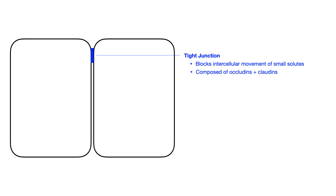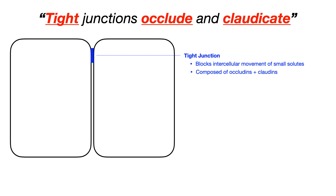Tight junctions are composed of two structures: occludins and claudins. My mnemonic to memorize all of this in one simple sentence is that tight junctions occlude and claudicate. Occlude means to block, and claudicate — if you think about vascular claudication, where blood is blocked from getting where it needs to go — is a prefix meaning to plug up and block. So when you think of that sentence, it tells you the role of tight junctions is to block things, and occlude and claudicate remind you of occludins and claudins, the two structures found in tight junctions.